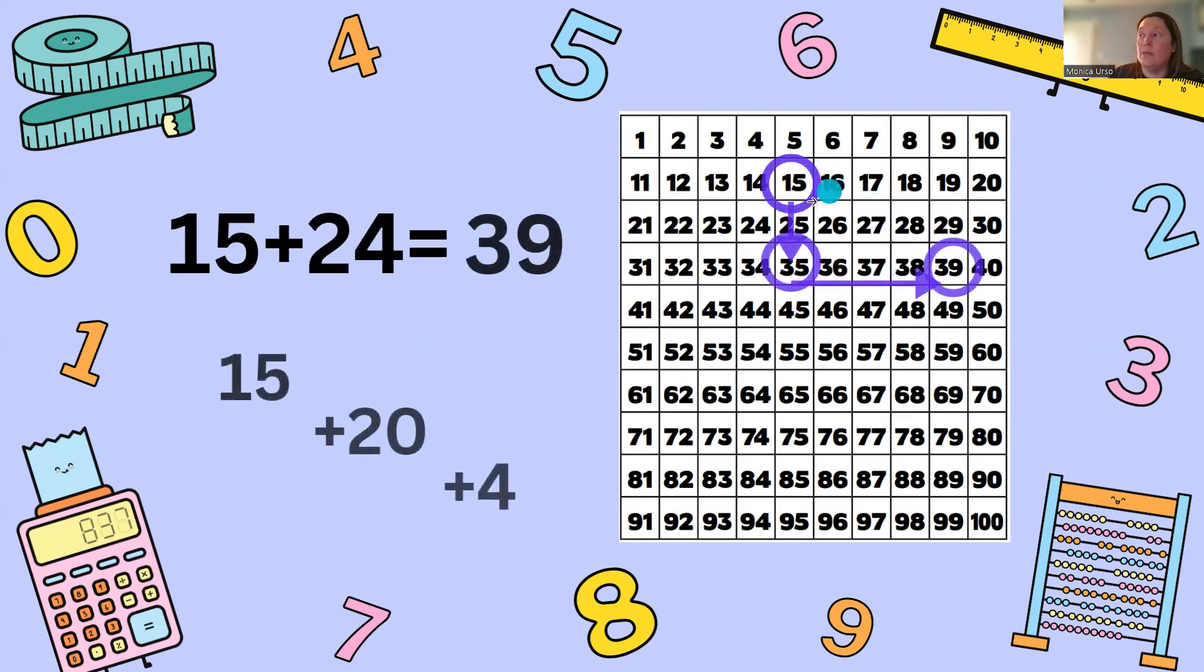So we break it down like this: we start with 15, we add 20 by sliding down two rows, 10, 20, we get 35 and then we're going to add 4. So we're going to slide to the right 1, 2, 3, 4 and we get our answer of 39.